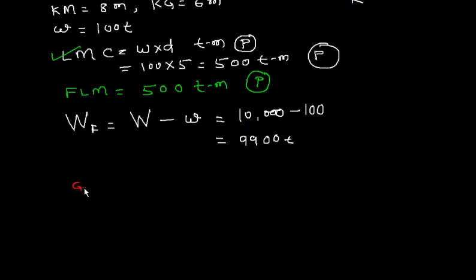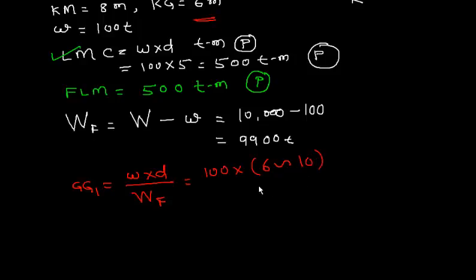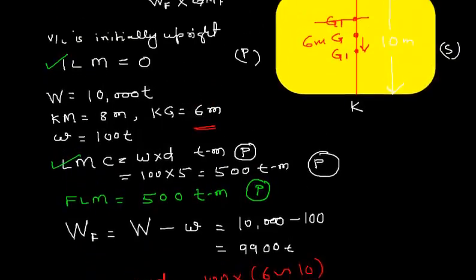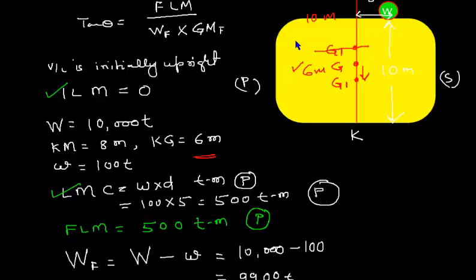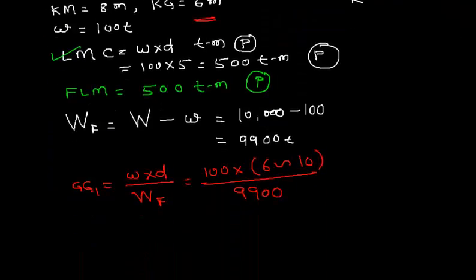GG1 equals W times d divided by WF. W is 100 and d in case of loading or discharging is the difference between KG of the ship and KG of the weight. KG of the ship is 6 meters and KG of the weight is 10 meters divided by WF which is 9,900. This will be downward.